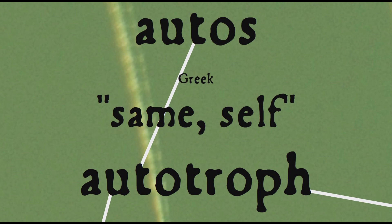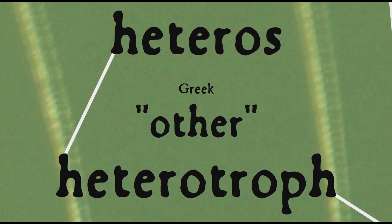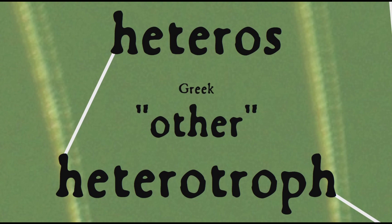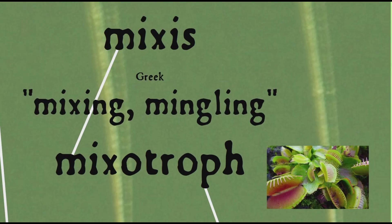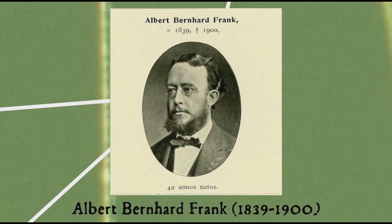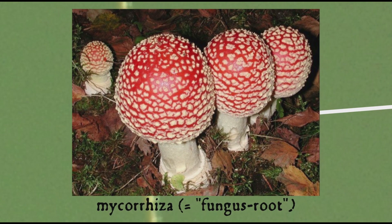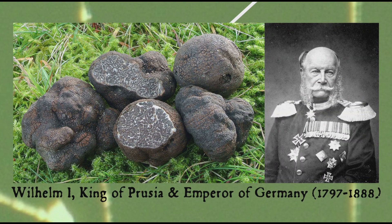Already in use since the 19th century have been the terms autotroph — basically equivalent to producer — from Greek autos meaning self, heterotroph — equivalent to consumers — from Greek heteros meaning other, and myxotroph, which refers to things such as carnivorous plants which derive their food from both photosynthesis and consuming other organisms, from Greek myxis meaning mixing or mingling. Though these terms ultimately come from Greek, they were actually coined in German by German scientists, such as botanist Albert Bernhard Frank, who in addition to producing the term autotroph also coined the term mycorrhiza — the symbiotic relationship between a fungus and the roots of a plant — and attempted to find a way to cultivate truffles for the king of Prussia.